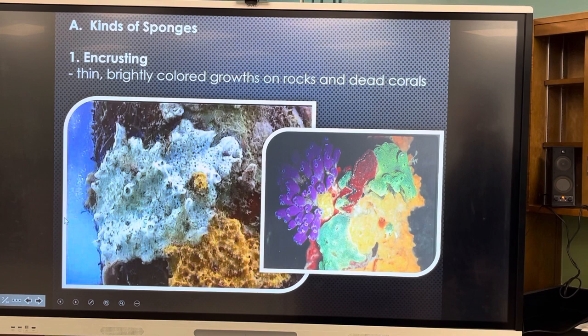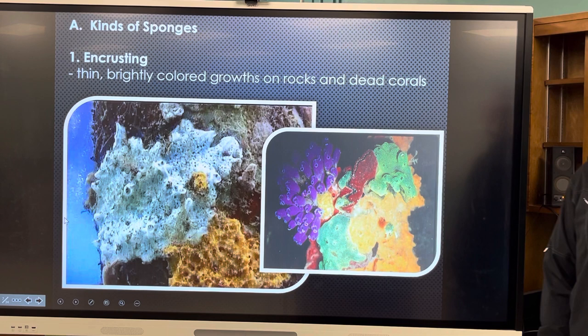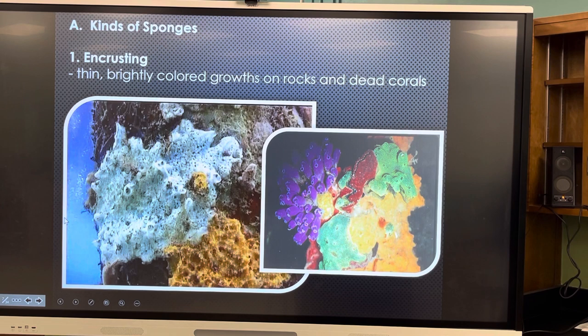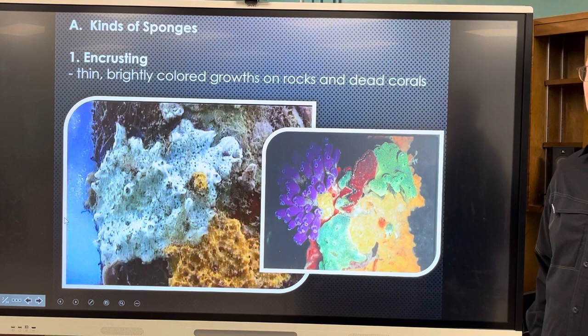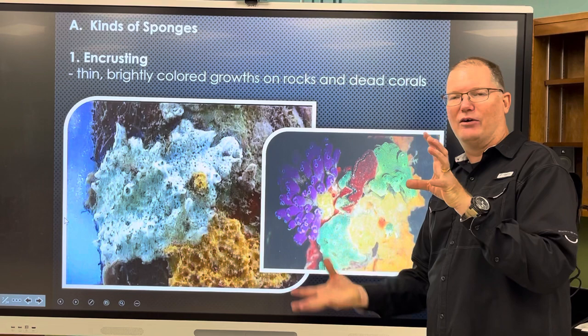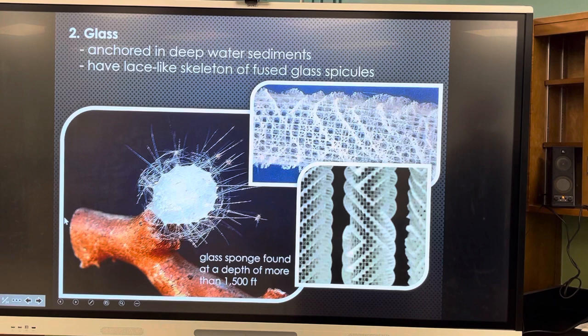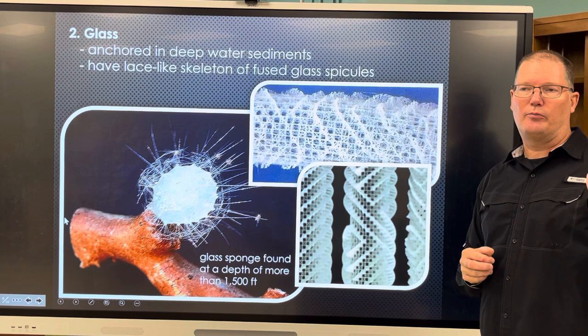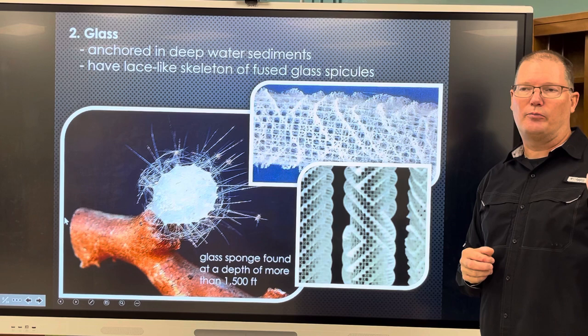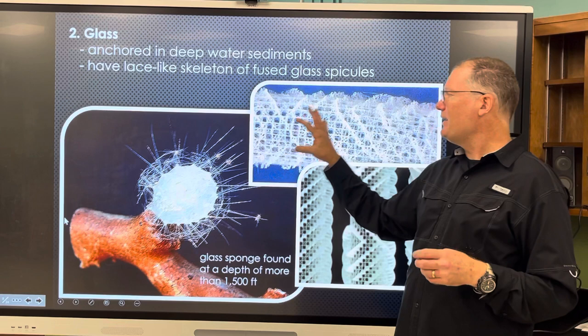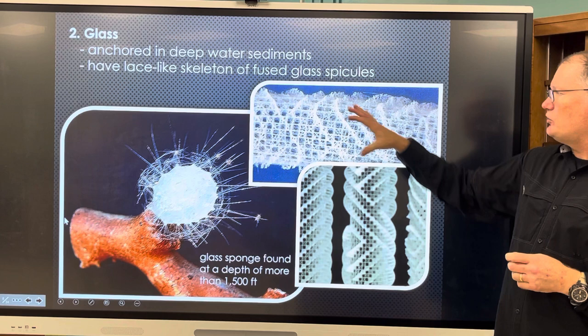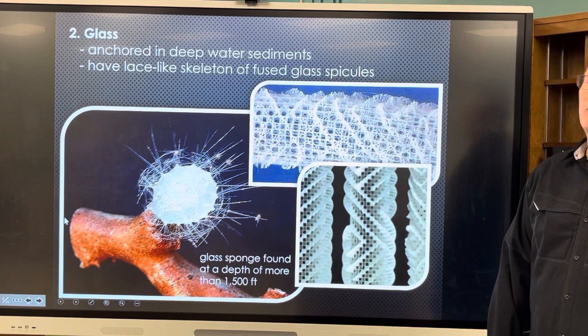There are different kinds of sponges. Encrusting sponges are thin, brightly colored growths on rocks and dead corals — called encrusting because they form a crust of sponge around things; they come in all different colors and are quite beautiful. Glass sponges are very deep-water sponges with siliceous spicules and a lattice-like skeleton. One was found at more than 1,500 feet deep.